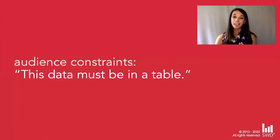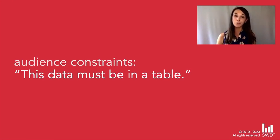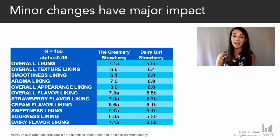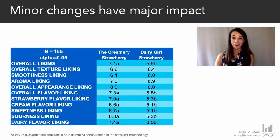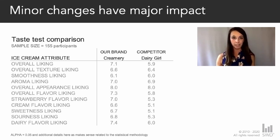Now let's look at a second very common type of constraint: audience constraints. Let's assume your audience is used to seeing this data in a table, and you don't have the leeway to make the changes you want. So how can we still communicate effectively? Minor changes can have major impact when we have to use tables. First, reduce the amount of color shown — take away the color completely, then be strategic about where to add it back in. I'm a big fan of starting with everything gray and nothing emphasized, then thinking about how to make the data itself stand out.